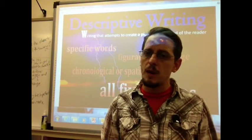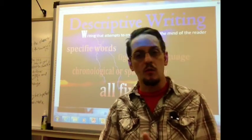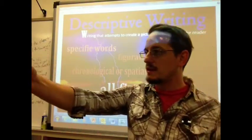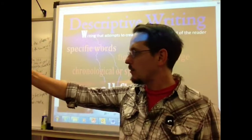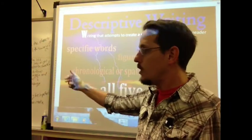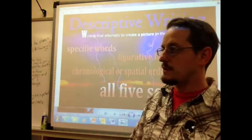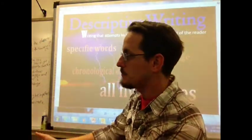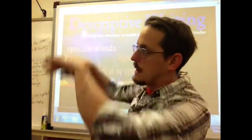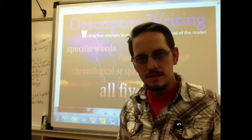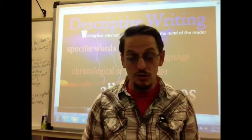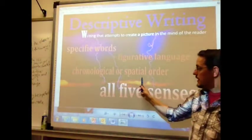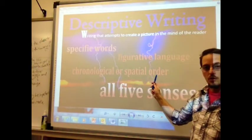Or if we're describing a tree or a room, we might describe it based on how we walk around the room. If we're describing a tree, we might describe it from bottom to top or top to bottom. That's called spatial organization, or spatial order.